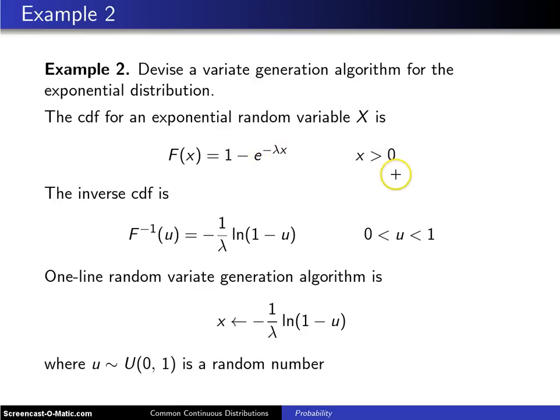We derived that earlier. If you set that cumulative distribution function equal to u and solve for x, you will get what is known as the inverse cumulative distribution function.